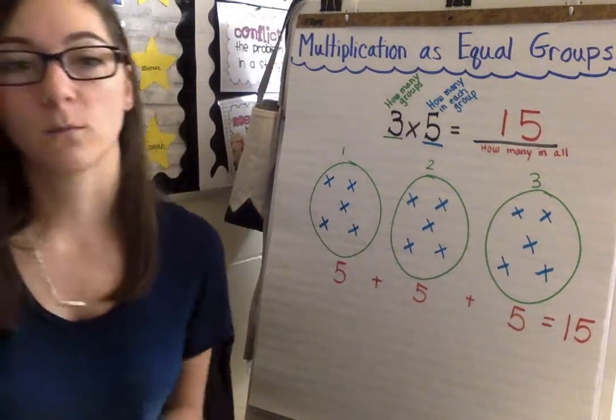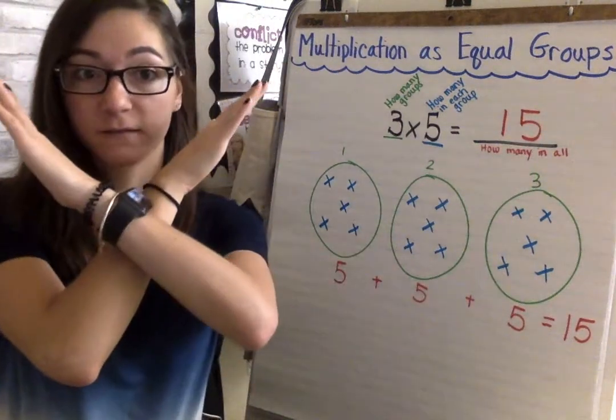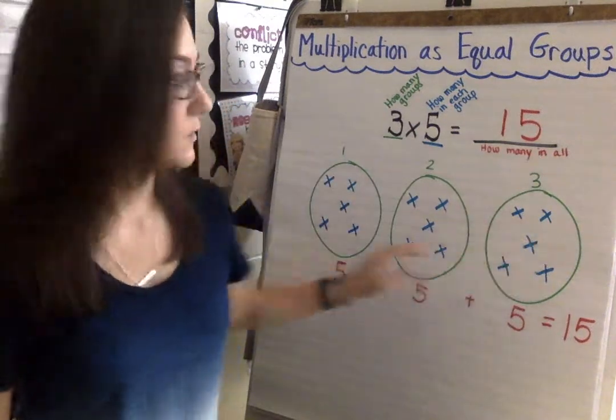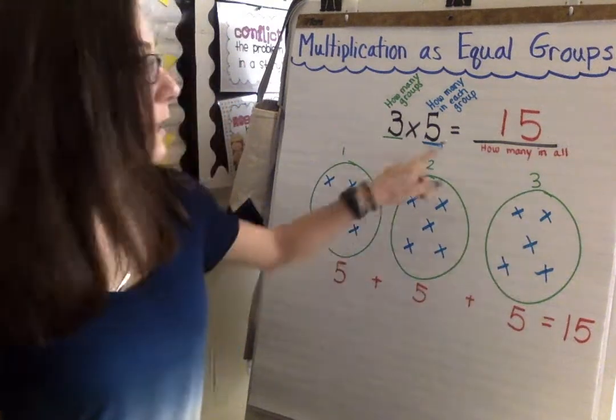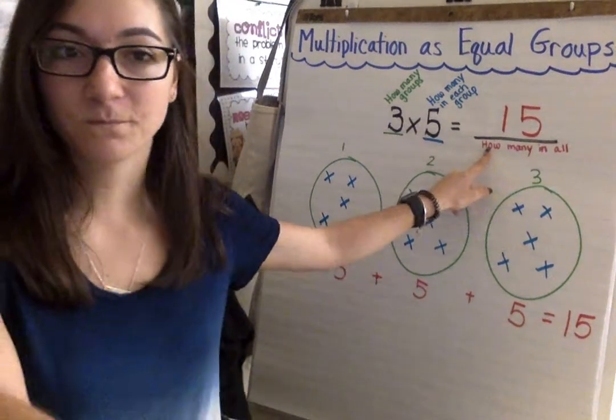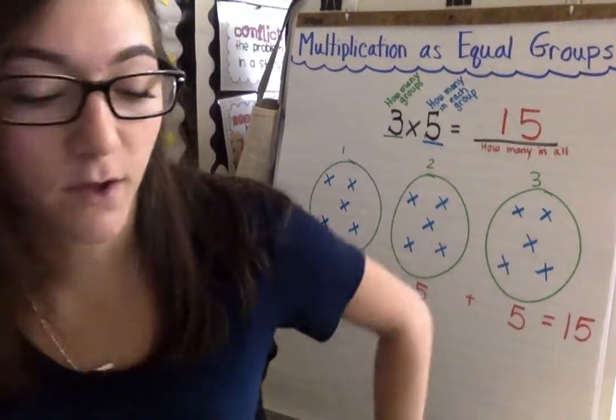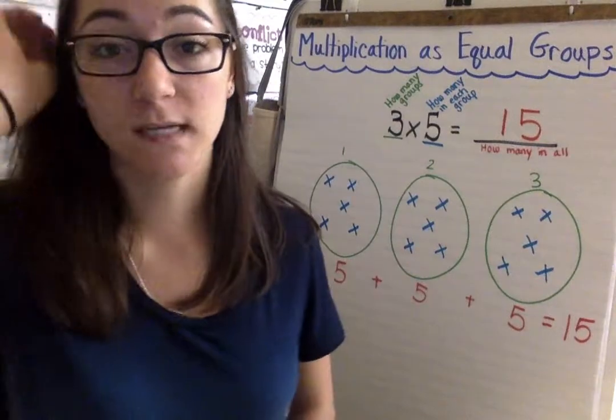So when we have three groups of five, three groups with five in each, we get a product of fifteen. Or we have fifteen in all. Okay so go ahead and try the problems on the next slide using equal groups.